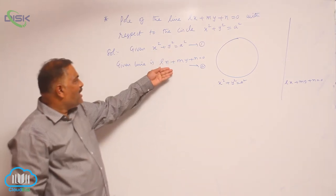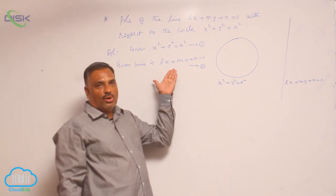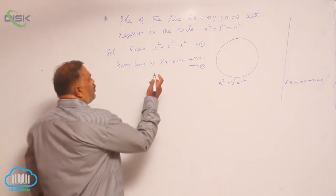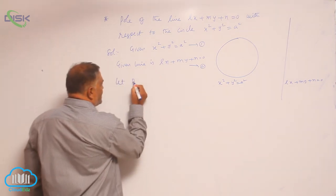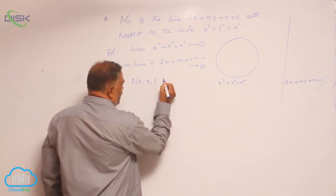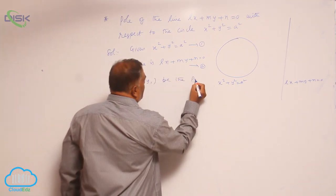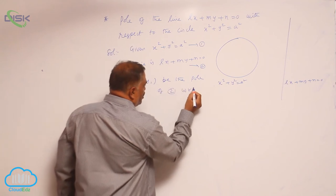Where a particular line has a pole, it is basically a polar. So, we assume that let P(x₁, y₁) be the pole of equation 2 with respect to equation 1.